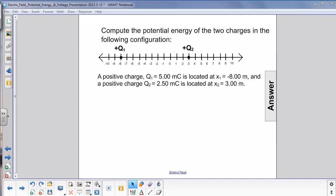Compute the electric potential energy of the two charges in the following configuration. We have charge Q1 equal to 5 millicoulombs located at negative 8.0 meters, and a positive charge Q2 equal to 2.50 millicoulombs at 3.00 meters.